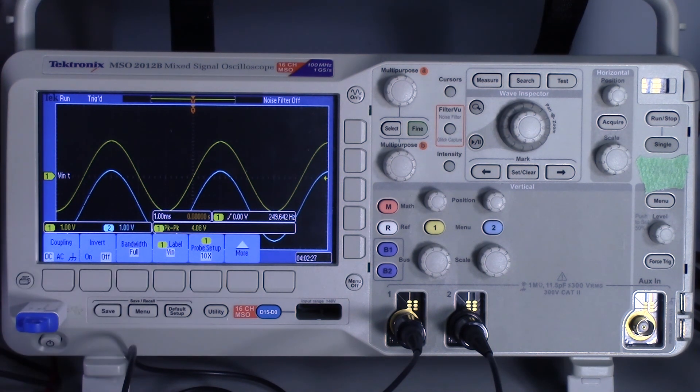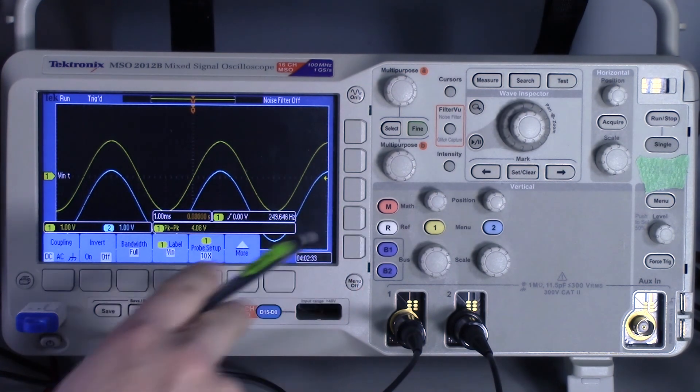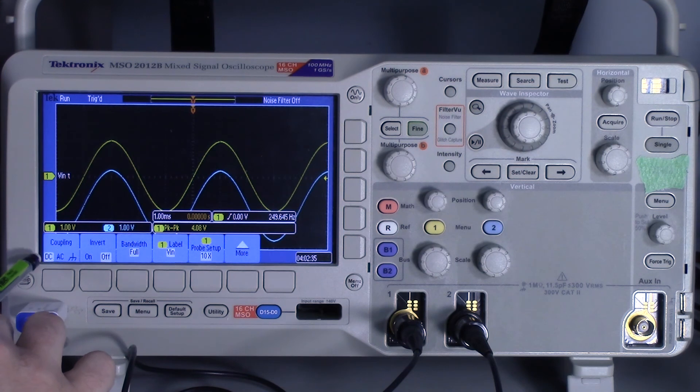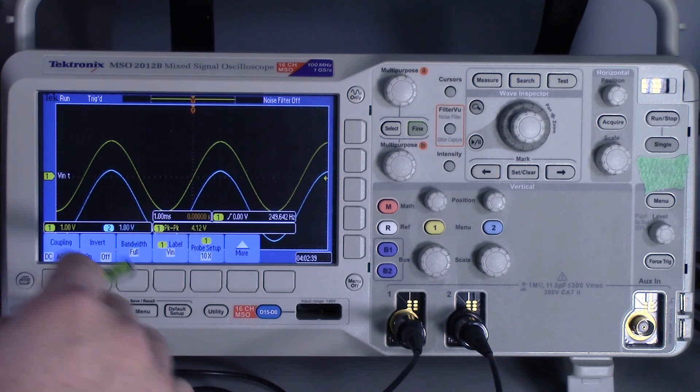All right, in this video I'm going to cover the difference between AC and DC coupling of the input probes. You can see I have channel 1 turned on, and what I'm referring to is over here, this is the soft button. There's DC, AC, and ground coupling.